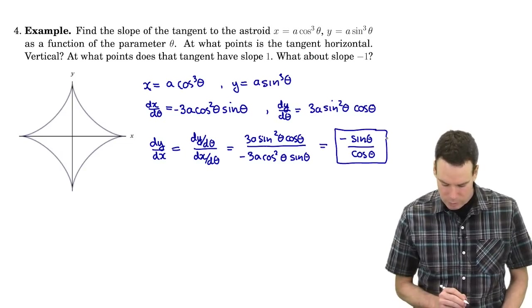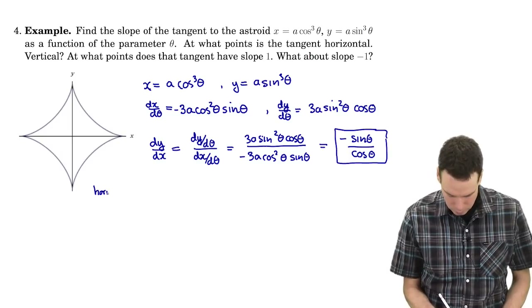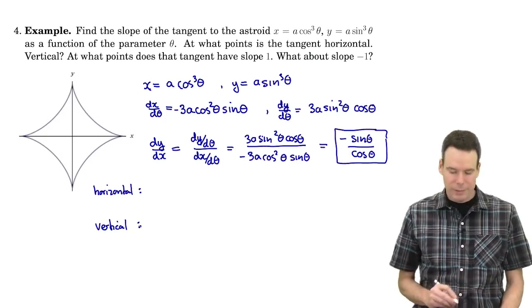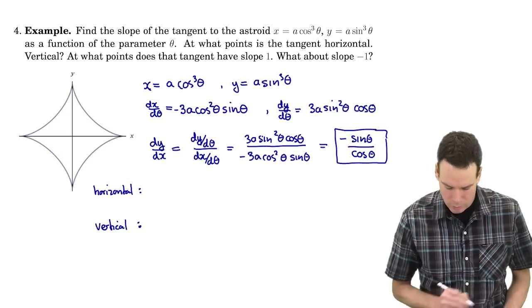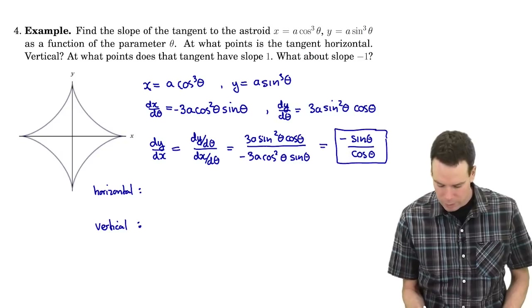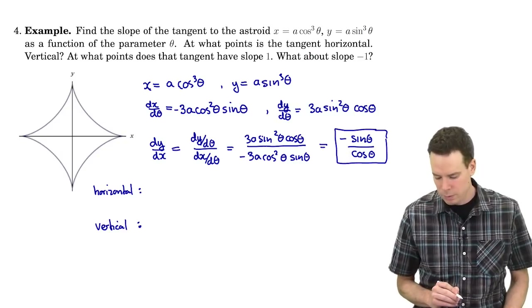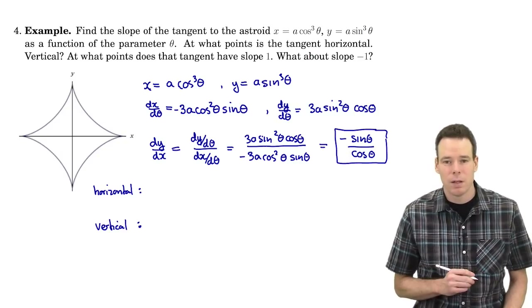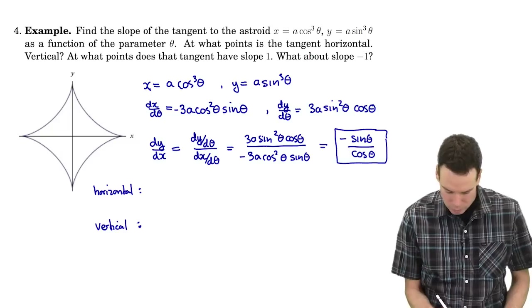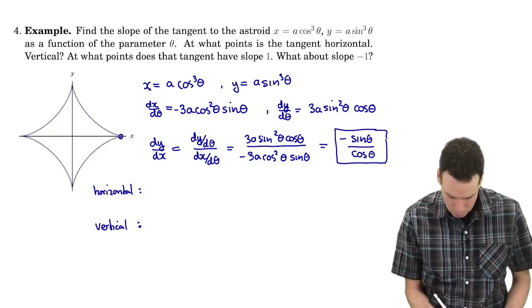At what points is the tangent line horizontal and vertical? Before computing these, let's look at the curve and see what information we have about various points. We've got x equals a cos cubed theta, y equals a sin cubed theta. When theta is 0, cosine is 1 and sine is 0, so that gives us the point (a, 0).